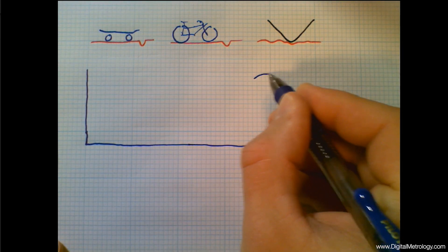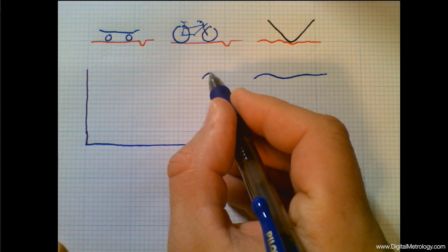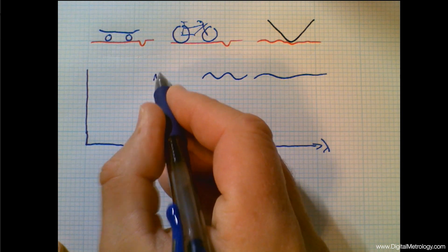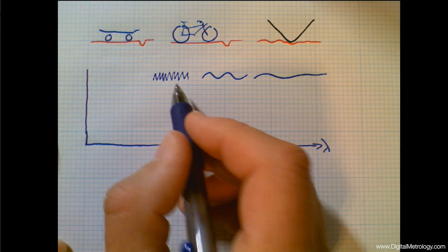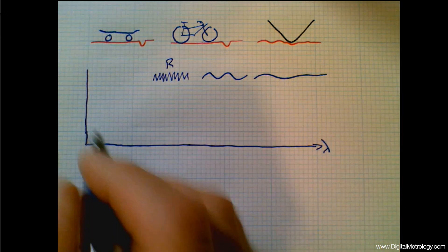Now it's no problem for a stylus to see long wavelengths like form. Our stylus of just about any radius can see waviness. We get into the world of roughness, though. Now we're seeing the size of the machining features versus the size of the tip radius, and we have some questions. So let's label that roughness.